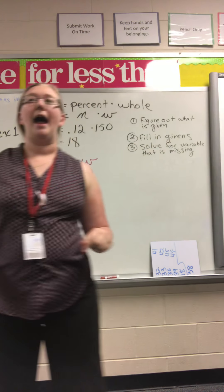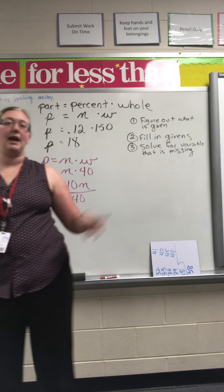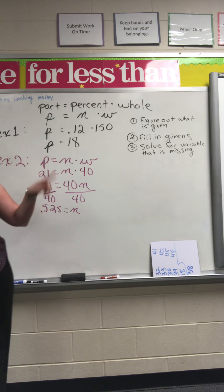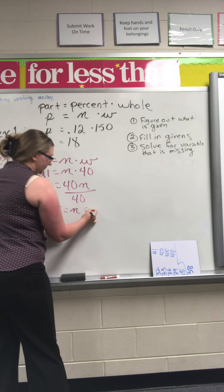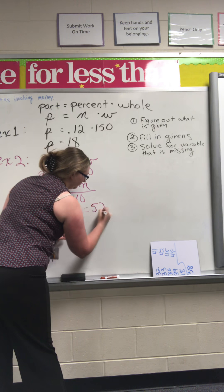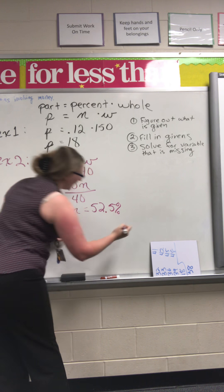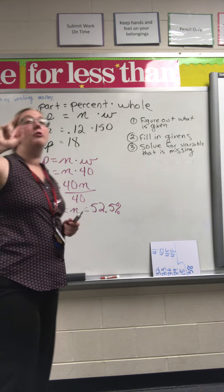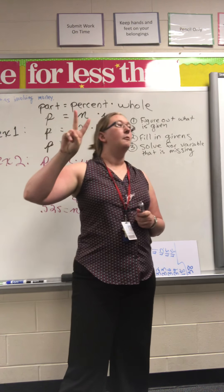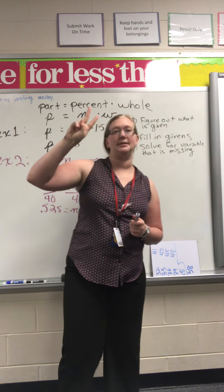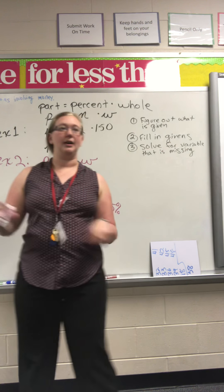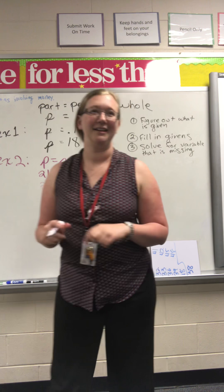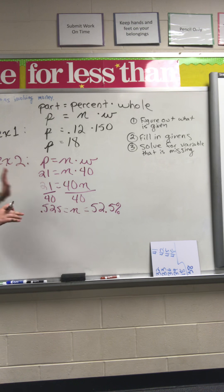So what do I have to do to convert to a percent? Move it to the right, to the right. I need to move it to the right. One, two to the right to go from a decimal to a percent. So when I move to the right, 0.525 turns into what? 52.5 or 52.5 percent. We can only move two decimal places. Whether we're going from a decimal to a percent or vice versa, we can only move two places. Going from percent to decimal, we go to the left. Going from decimal to percent, we go to the right. Questions about example two?